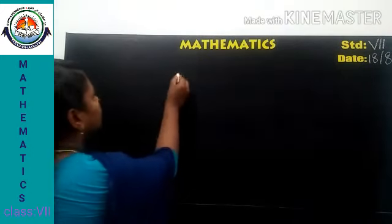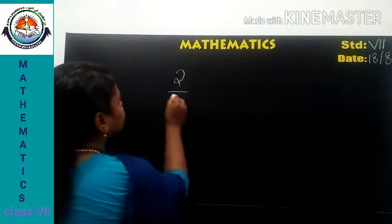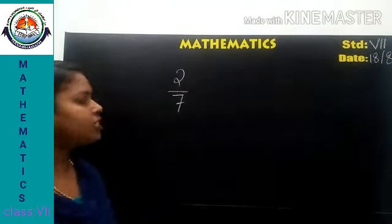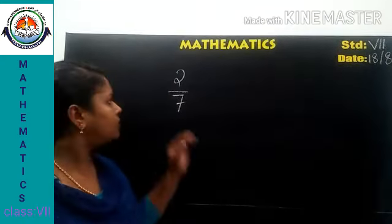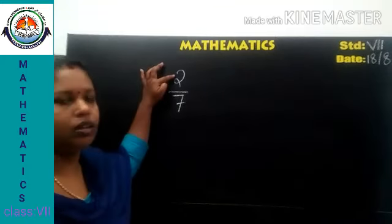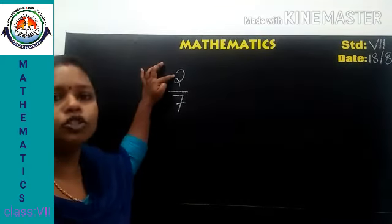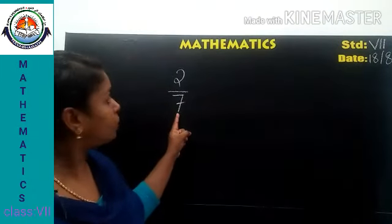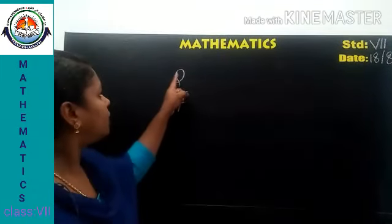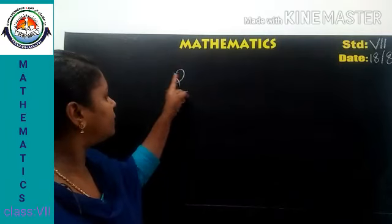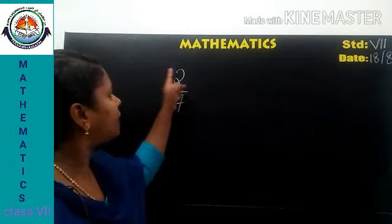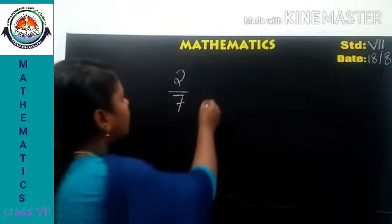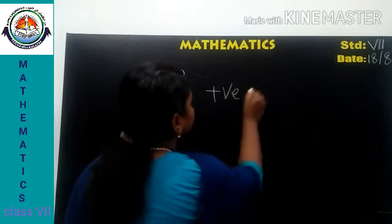Here, 2 by 7 is a positive rational number because the numerator is positive 2 and the denominator is positive 7. Since both the numerator and denominator are positive, it is a positive rational number.